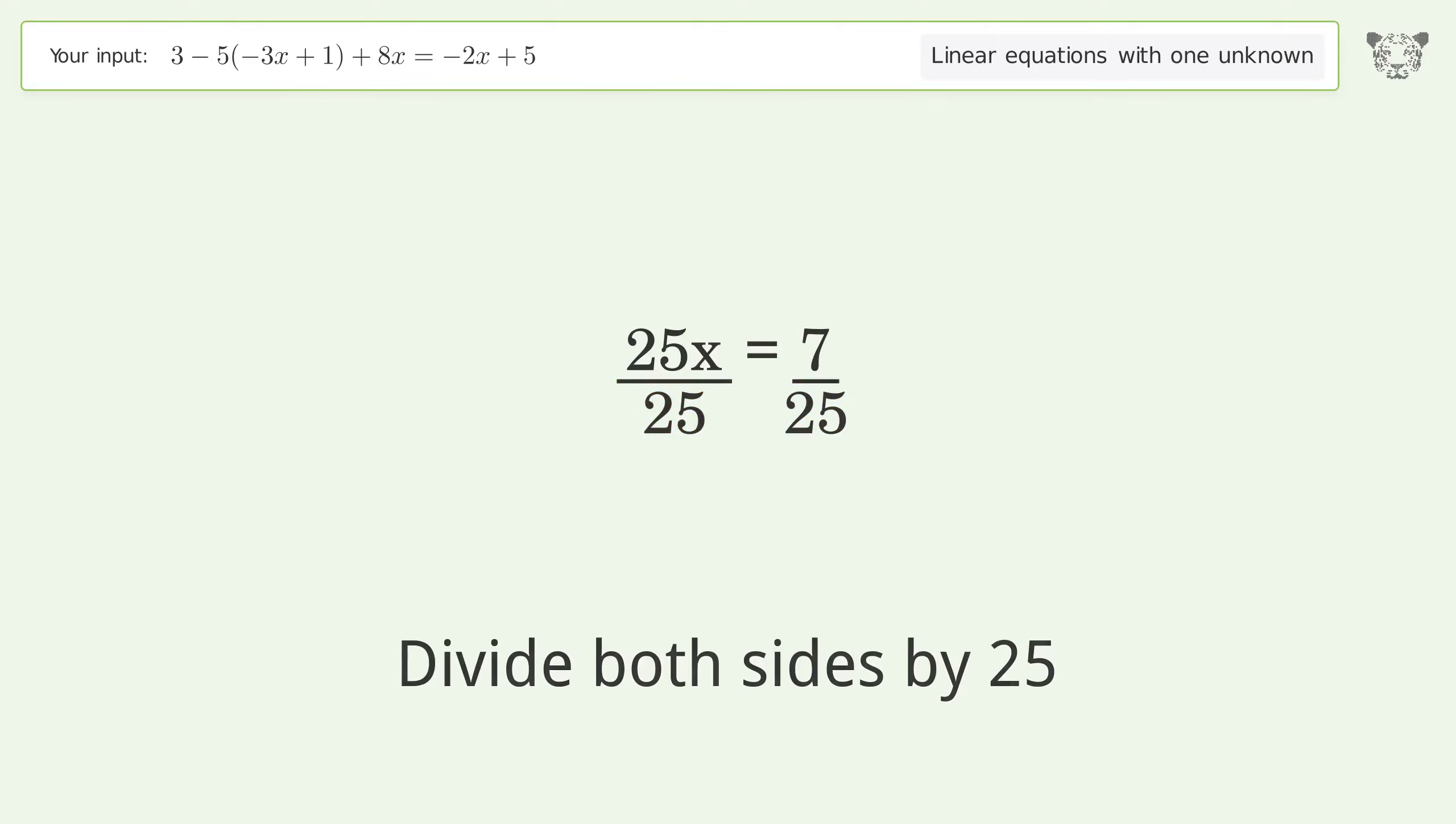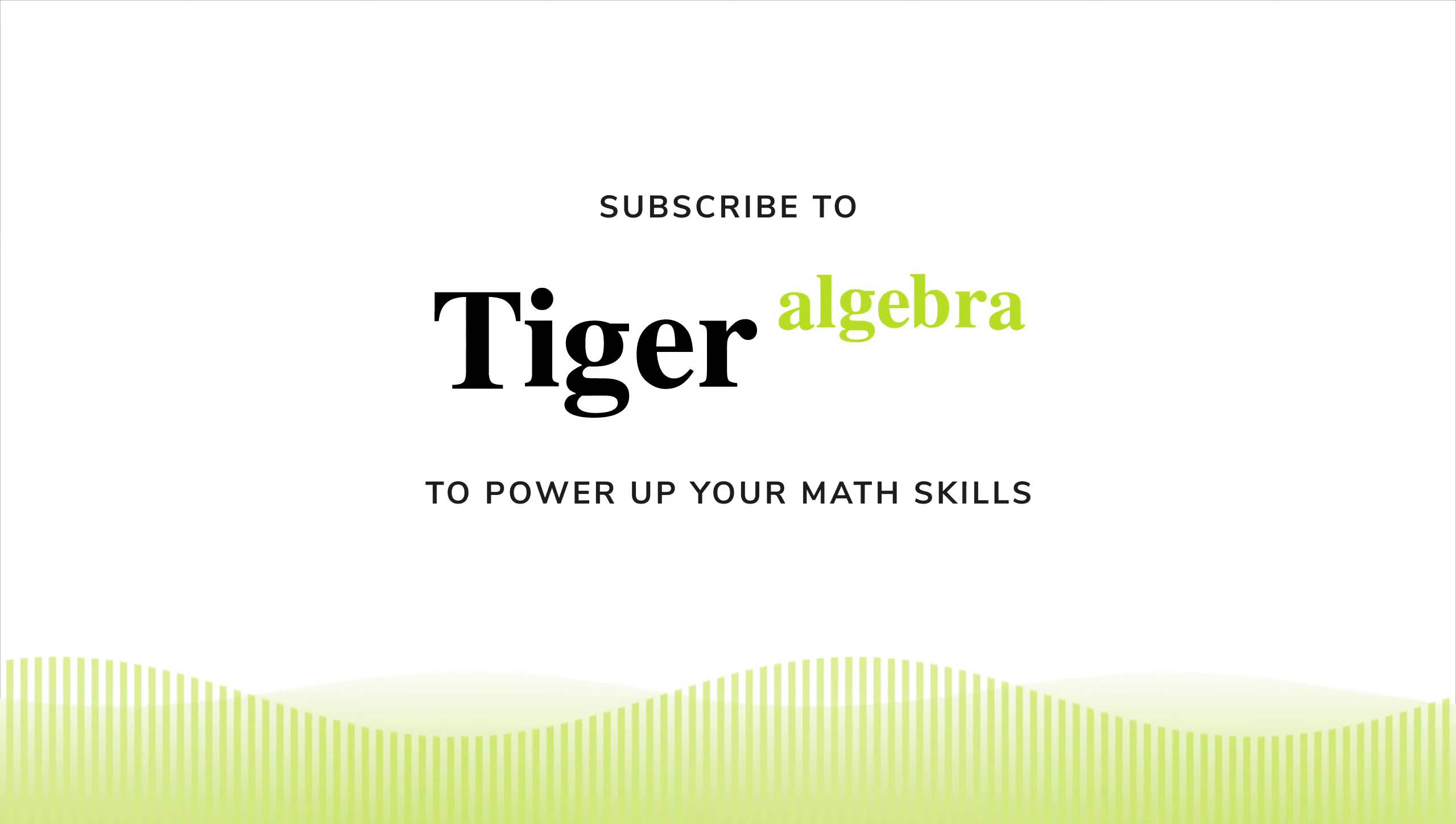Isolate the x. Divide both sides by 25. Simplify the fraction. And so the final result is x equals 7 over 25.